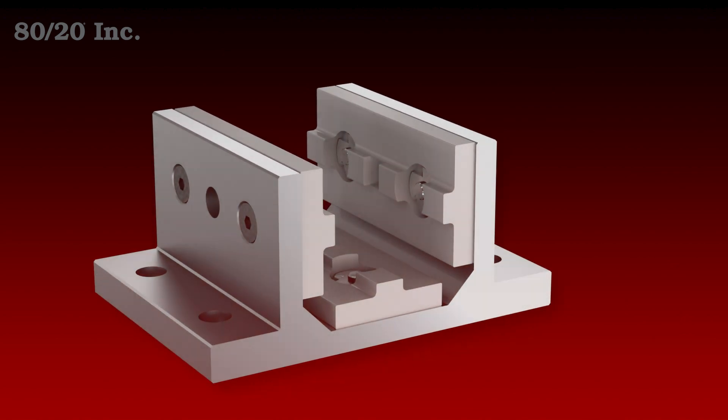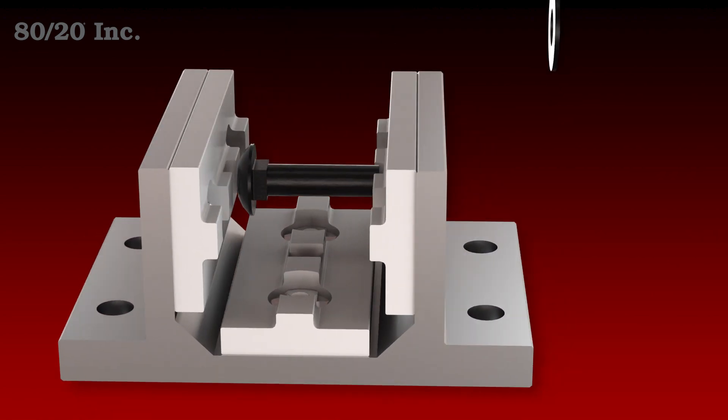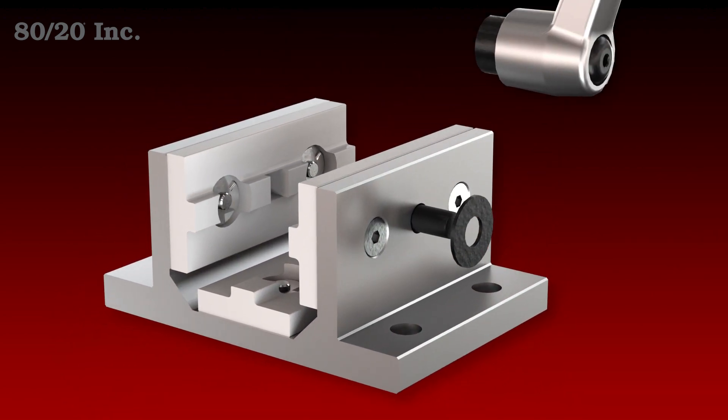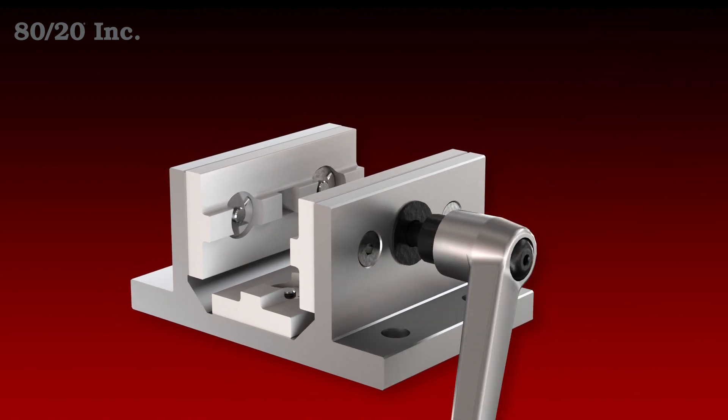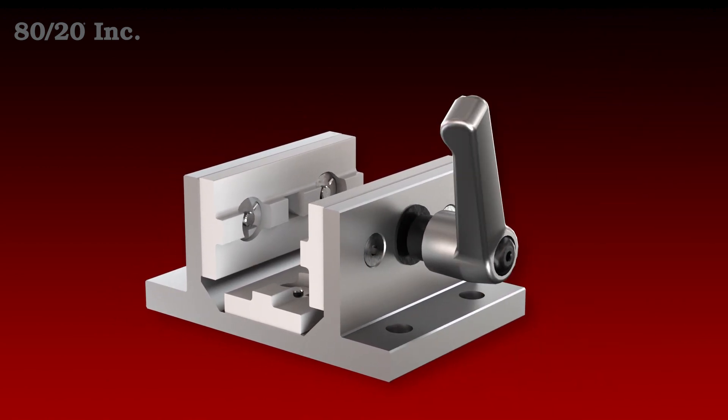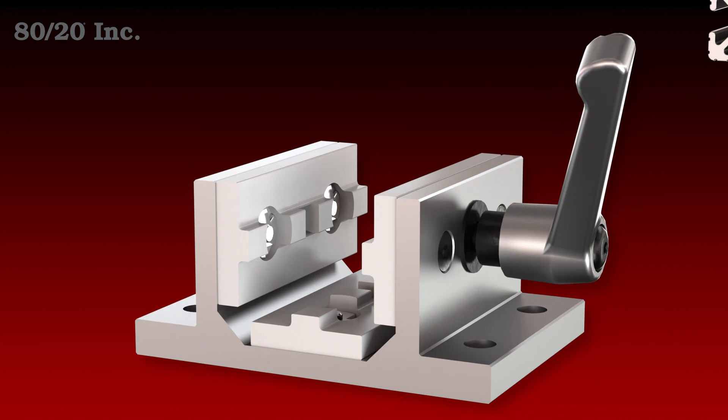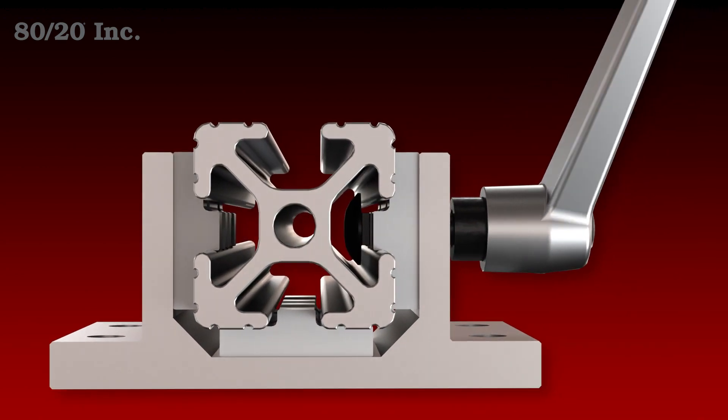So if you decide to use a brake, you'll take your bolt and feed it from the inside out. You'll take your washer, put that on the outside, and then thread on your handle. From there, you'll feed through your profile and tighten it all down with your handle.